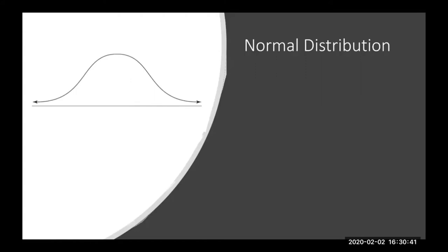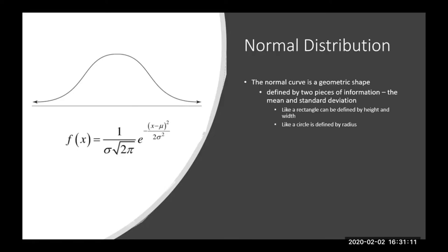We're going to talk about the normal distribution — it's really a cool and very useful distribution. I need to explain some of its properties, and then we can apply probability theories and inferential statistics to it. This is a picture of the normal distribution; it actually has a formula. I don't normally share it with students because it's a little intimidating, but I wanted you to see that it's a shape with definition — a geometric shape.